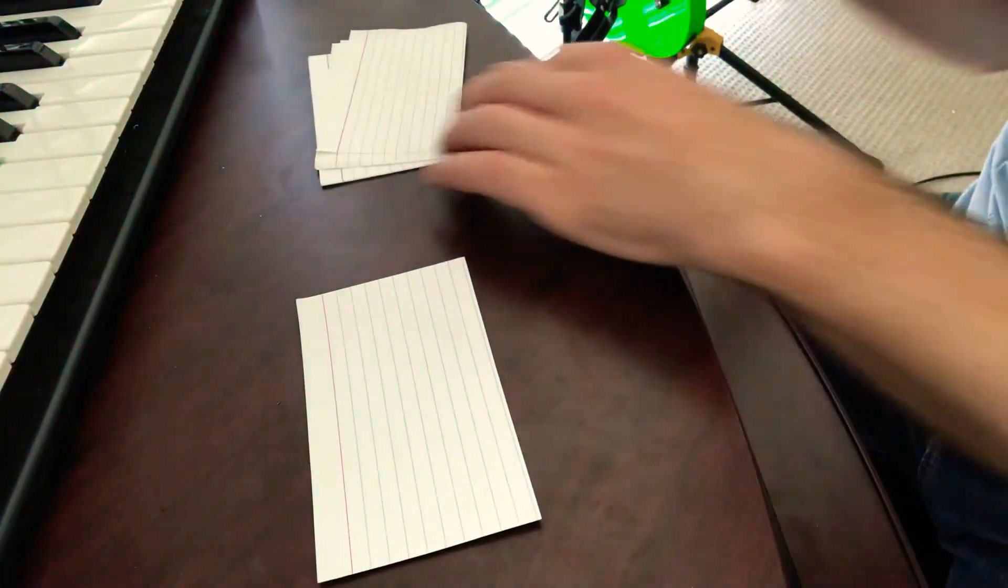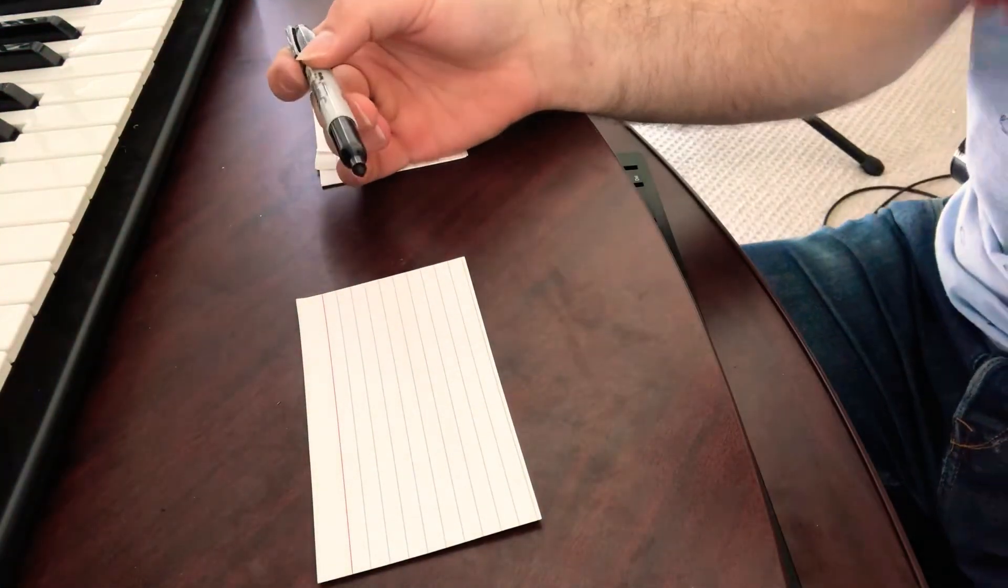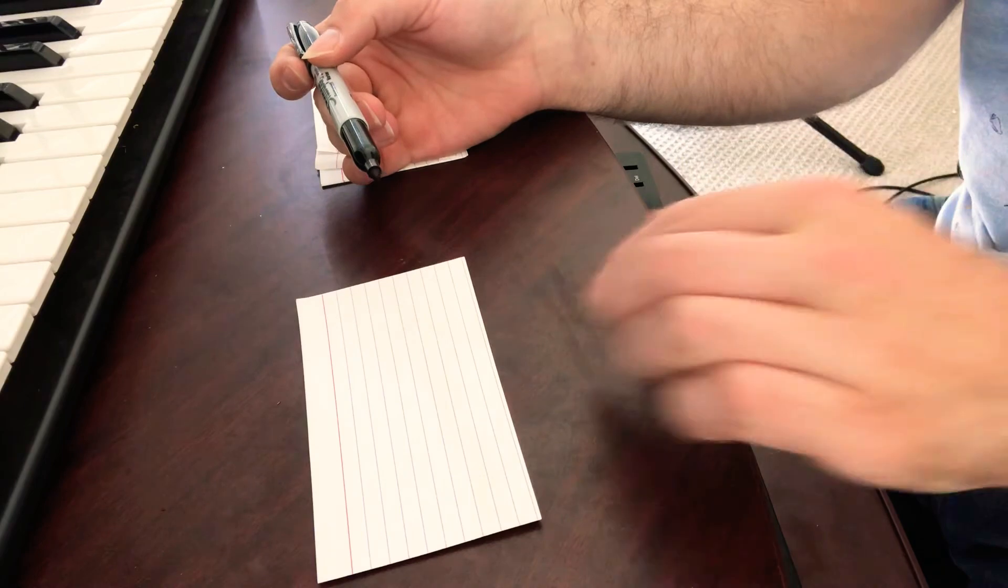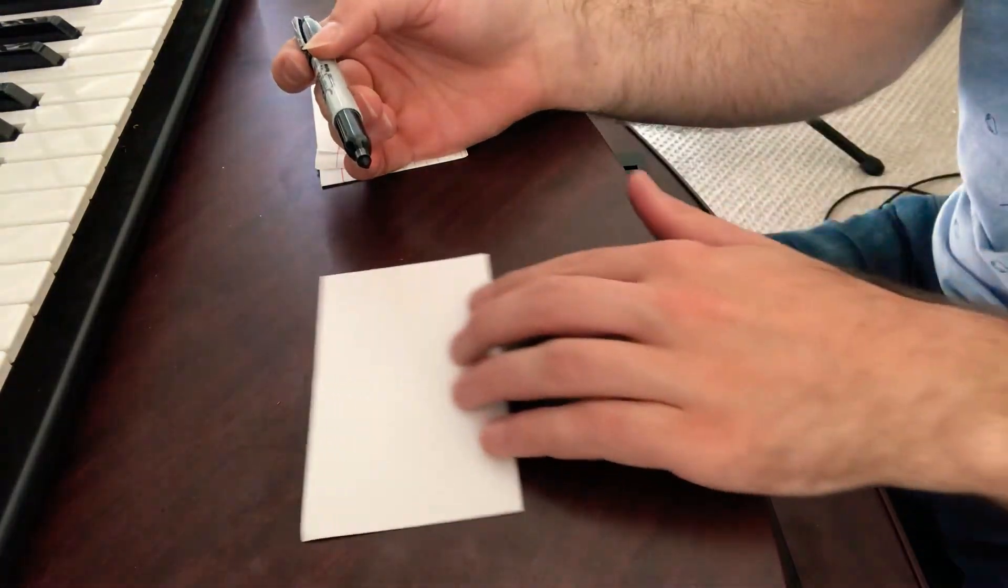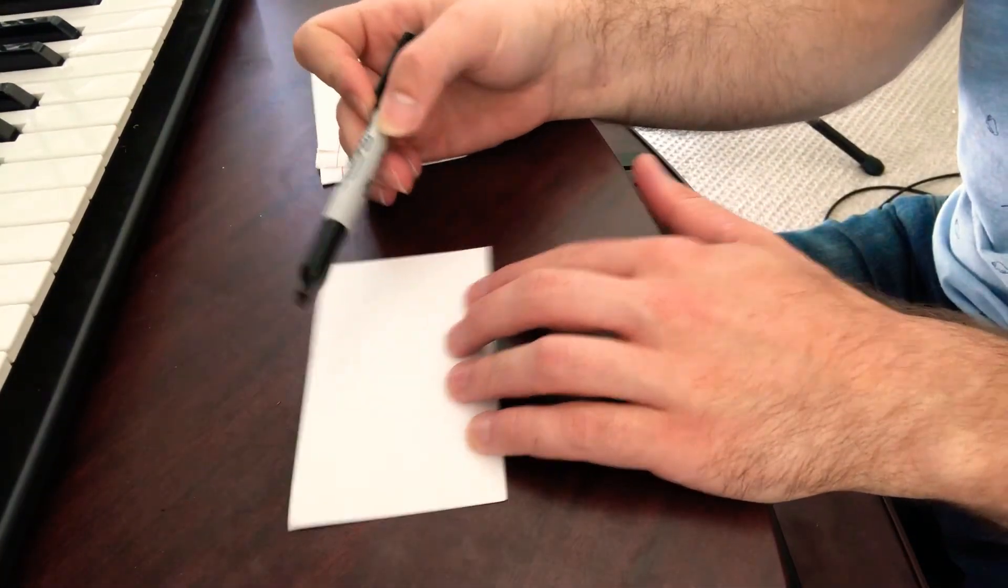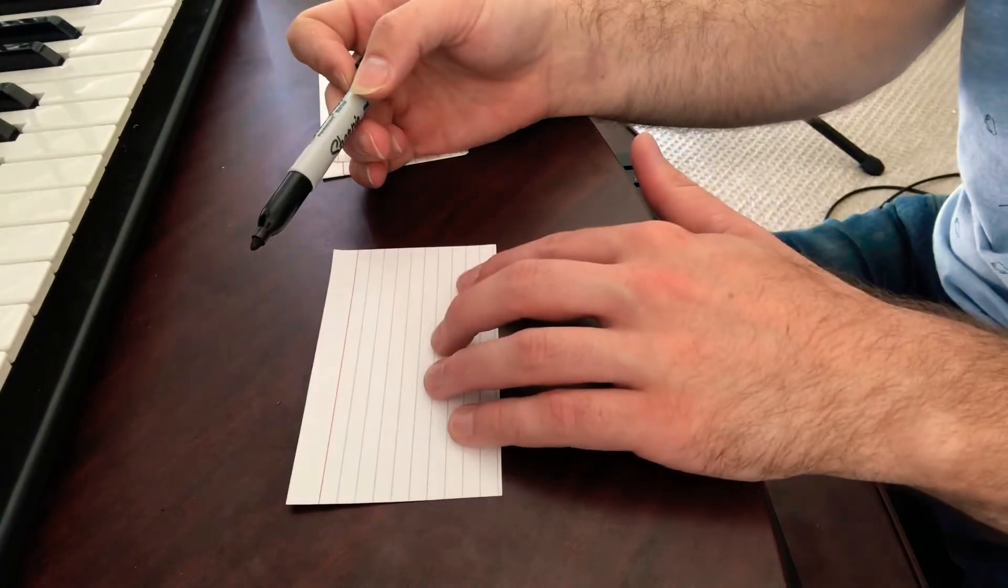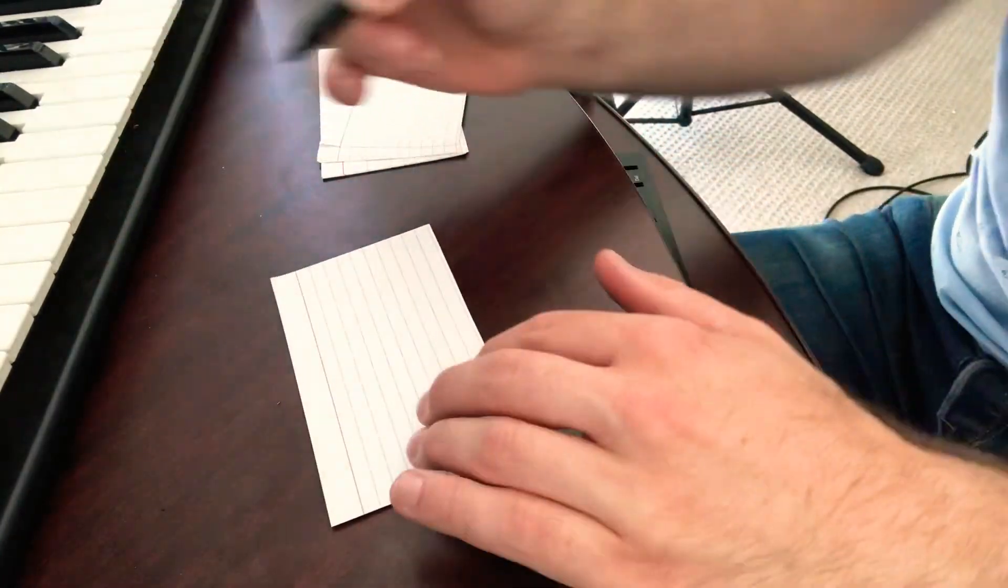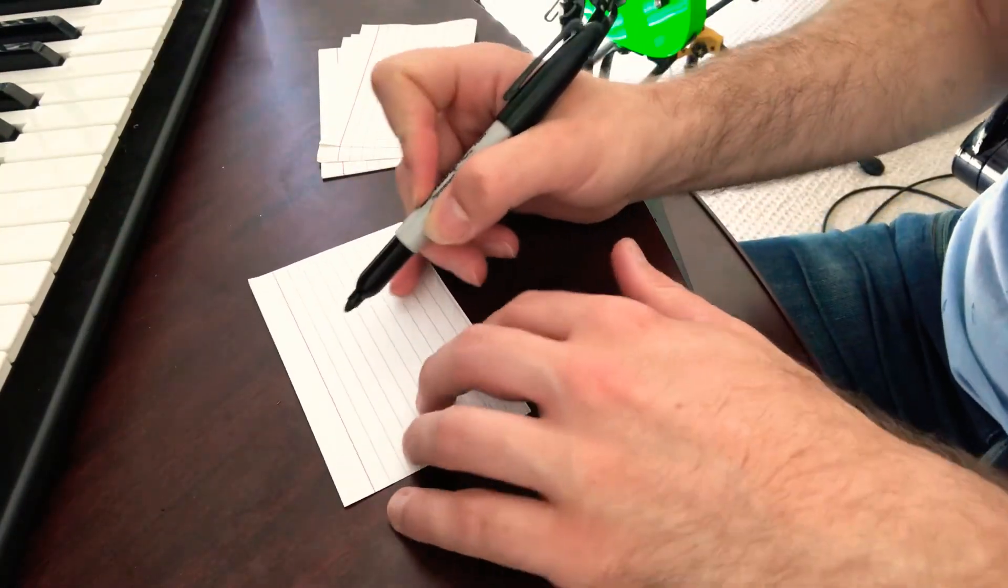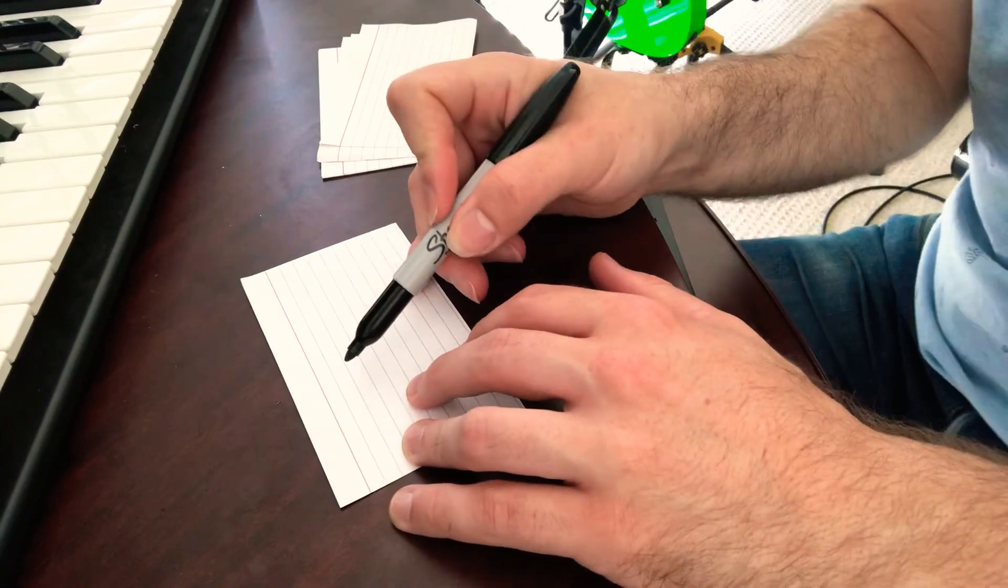I'm just using cue cards and a sharpie. The sharpie does bleed through, and in that case you wouldn't be able to write the answers on the back because they would bleed through the front. So I use a sharpie because it looks a little bit nicer, but you could change mediums if you want, or materials.